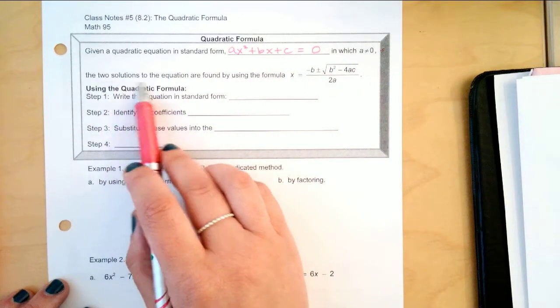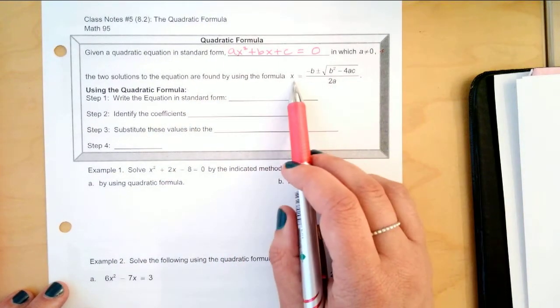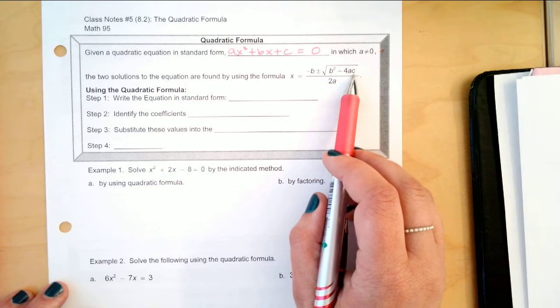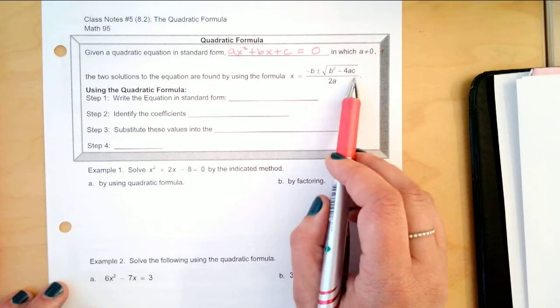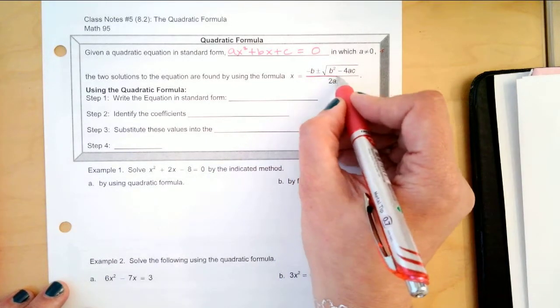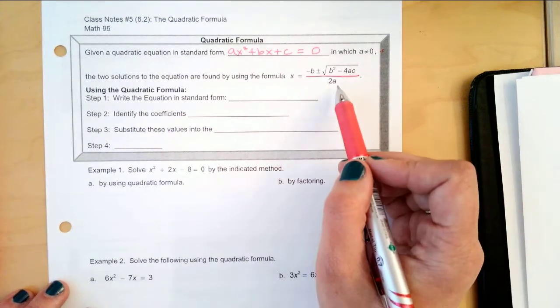So, the two solutions to the equation can be found using the formula. x equals negative b plus or minus the square root of b squared minus 4ac all over 2a. And I say all over because you see this fraction bar? It is dividing by all of it. Now, you might recognize some of this.